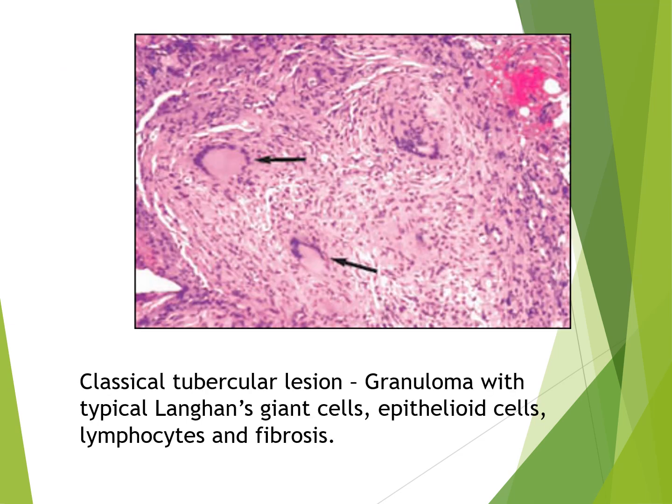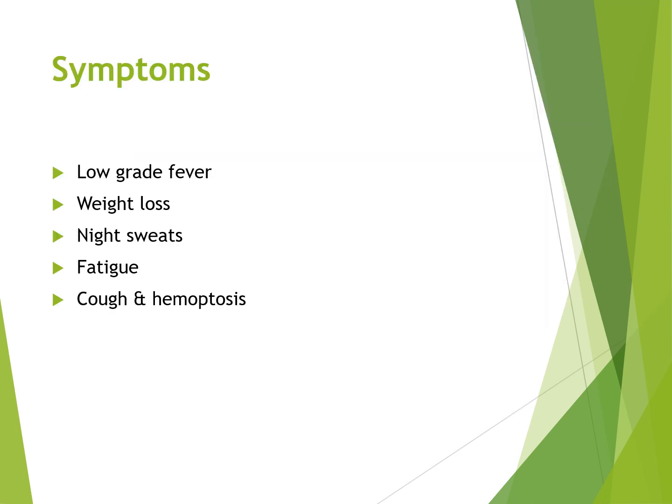There is a diagram showing a classical tubercular lesion — a granuloma of typical Langhans giant cells, epithelioid cells, lymphocytes, and fibrosis. The symptoms for a clinical picture would be low-grade fever, weight loss, night sweats, fatigue, cough, and haemoptysis.